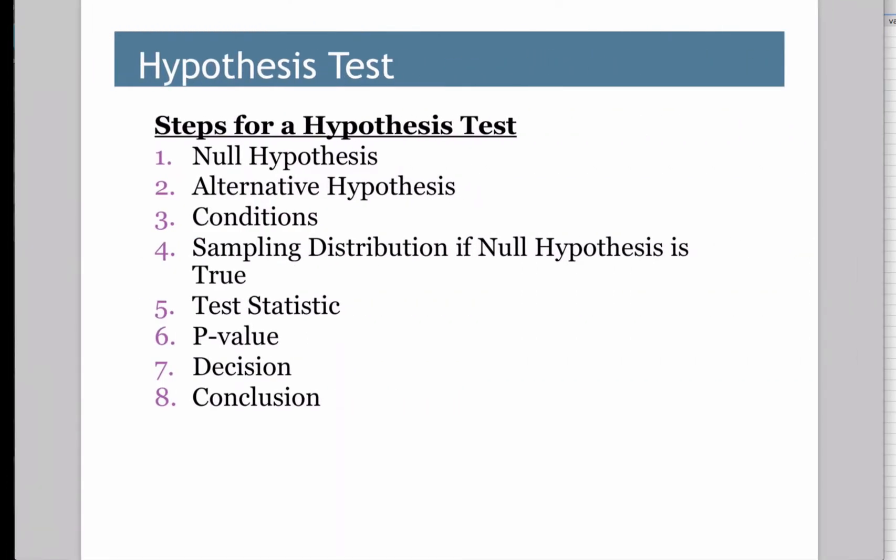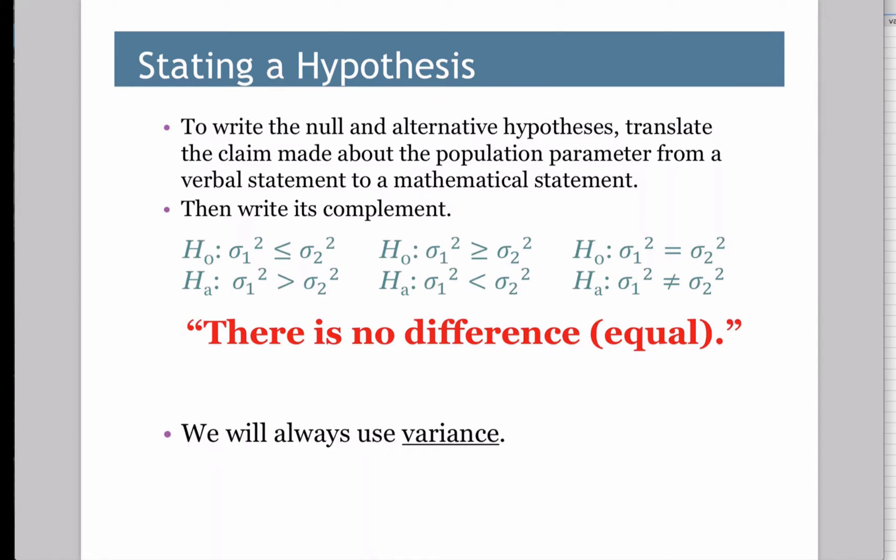Hypothesis test, same eight steps as always, just steps three, four, and five, the conditions, the distribution, and the test statistic change. But otherwise, everything else is pretty much the same old stuff in terms of hypothesis tests. Now if we have two groups, either the variances are equal and therefore alternative would be not equal, or one group is less than the other or one group is greater than the other. StatCrunch always uses variance, so we will always use variance in our null alternative hypothesis. Though we can test a standard deviation as well, but testing the standard deviation is just like testing variance.